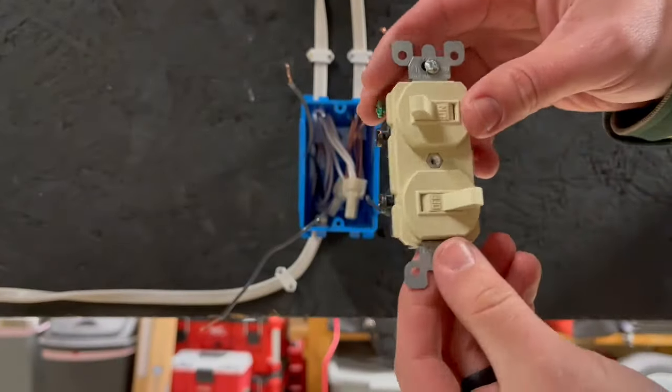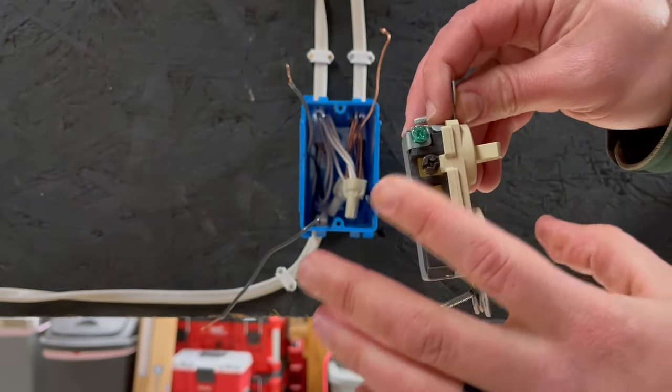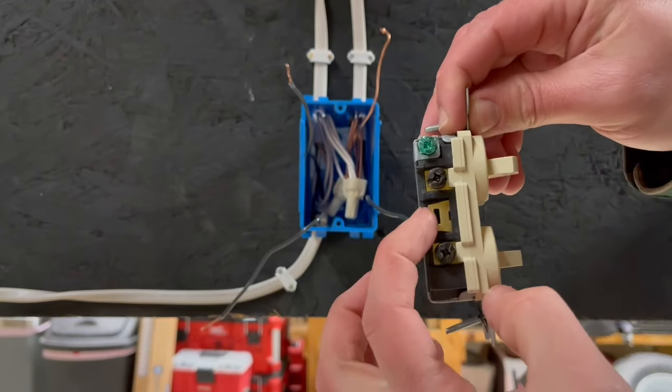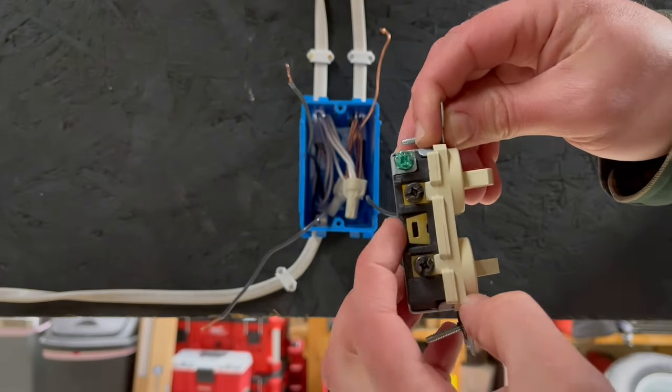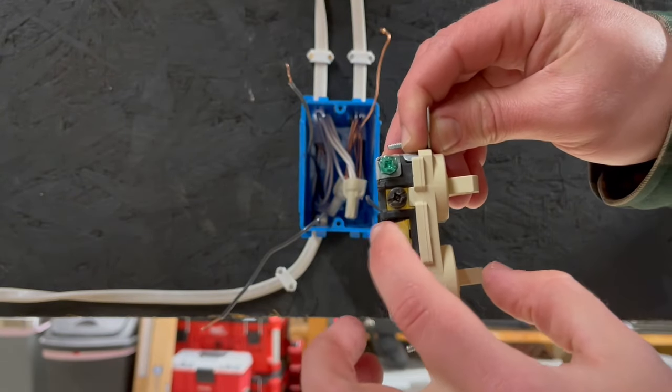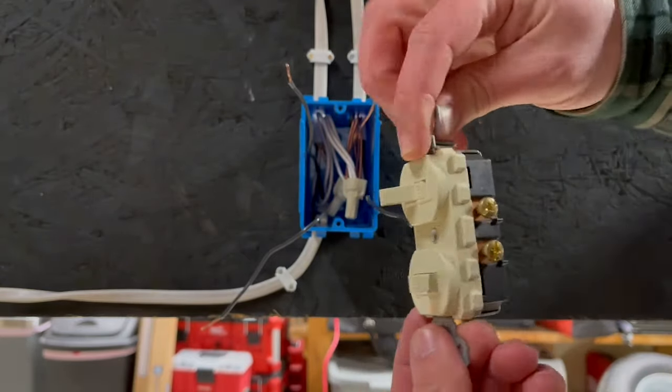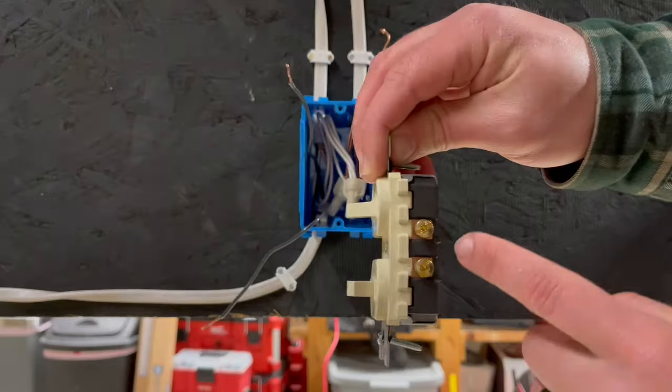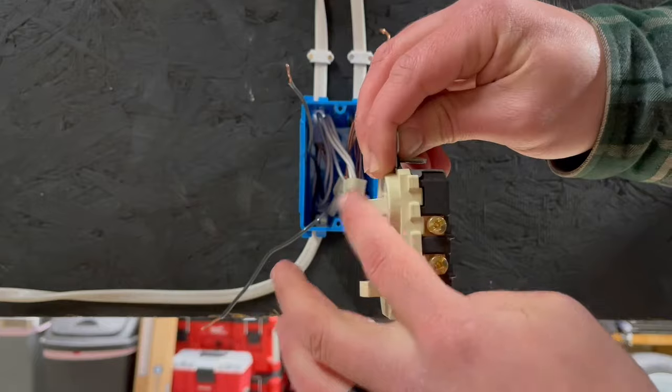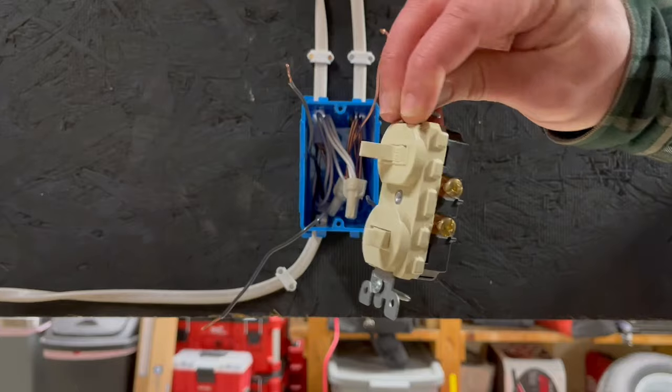Now closer look with this switch here. Our hots, our one hot is going to be on this black. It could be on either one because it is connected with this tab here. If you break this tab, then only one side of this switch is going to have power. So keep that tab on there. There's our ground, green for ground, our hot, and then here's where your two switch legs will go. So our light switch leg will go on this one so it's ran off this switch, and then our fan switch leg will go off this one so it's ran off this switch. Let's go ahead and put this in.